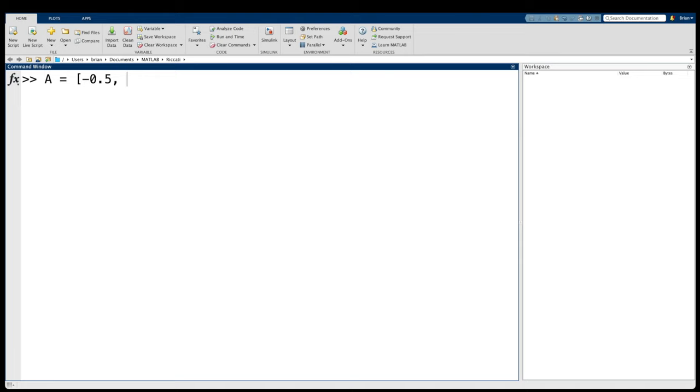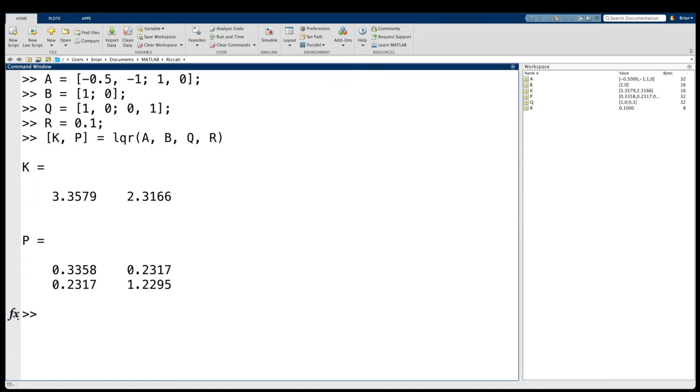Here I'm just going to define our plant dynamics with the A and B matrices, and then define our cost function with the Q and R matrices, and then solve for the optimal gains using the LQR function. And for this particular system, the two gains are about 3.4 and 2.3.